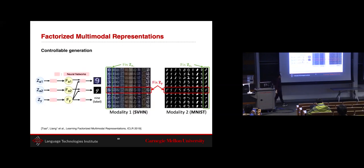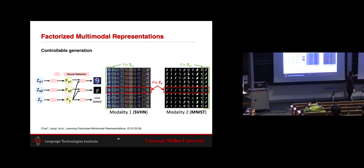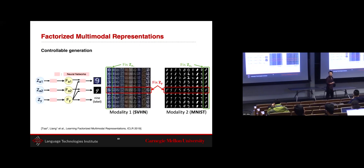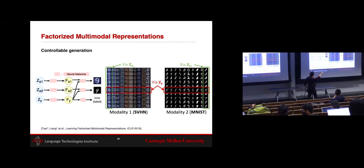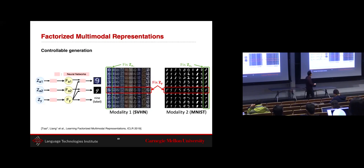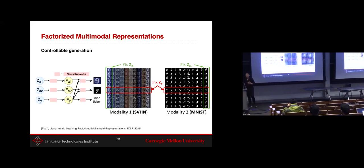This can be used for controllable generation: with three factors, fixing Za1 (the style factor of one dataset) while varying the label gives you the digits 0–9 in the same writing style. Fixing the joint label factor keeps the digit the same but lets you generate it in the style of different datasets. Three separate factors give three axes of control over data generation.